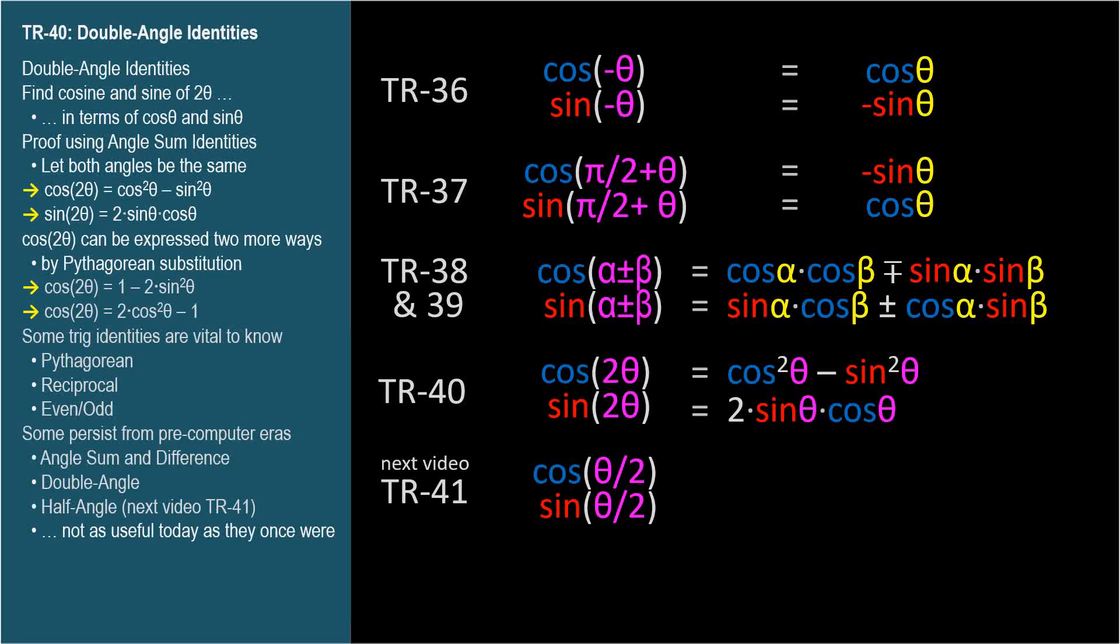TR-36 odd and even trig identities are important and, fortunately, easy to memorize. Negative angles can spring up all the time in engineering problems, and it's important to be able to simplify expressions that include trig functions of negative angles.